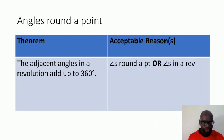Let us go to our Theorem Number 3 for today. The theorem says the adjacent angles in a revolution add up to 360 degrees. You need to remember what a revolution is—it is simply a round or a circle. There are two possible reasons that you may write: angles around a point, or angles in a revolution.